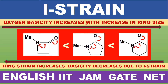Hyperconjugation involves sigma bond and pi bond — sigma-pi conjugation. Hyperconjugation is sigma-pi conjugation. And due to sigma, sigma electron delocalization, sigma electron is delocalized onto pi bond.